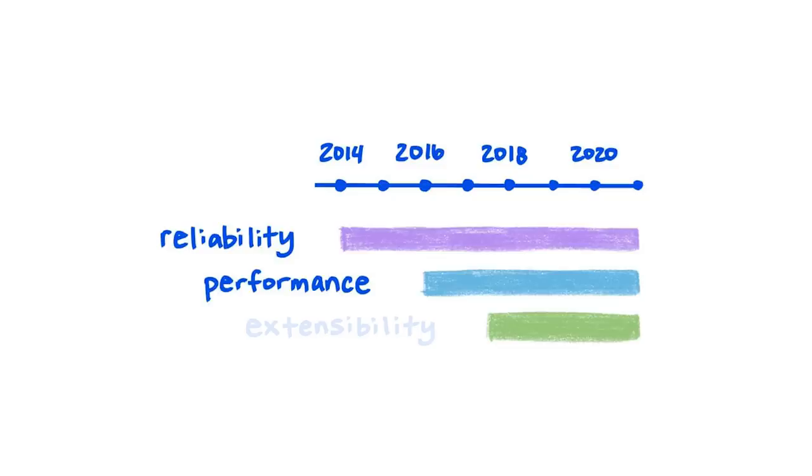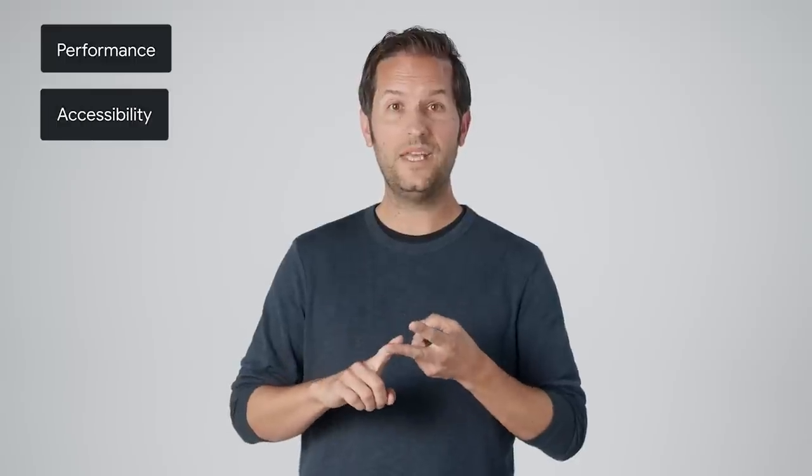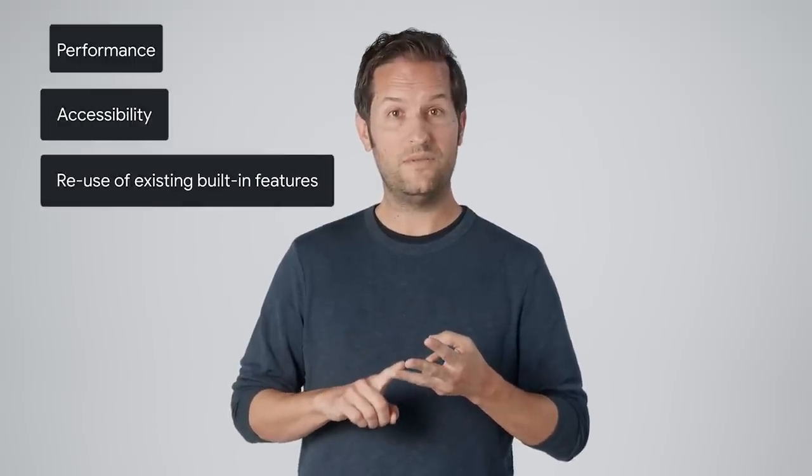Finally, we planned for extensibility. We want developers to be able to achieve the user experience they want, but in a way that takes advantage of the power of the browser for excellent performance, accessibility, and reuse of existing built-in features. To do so, we designed the architecture very carefully to provide extension points for developers in just the right places.